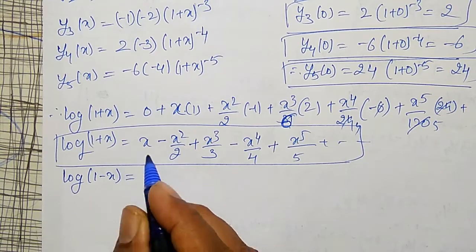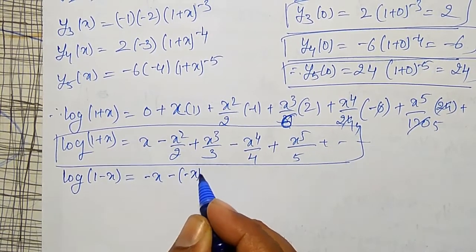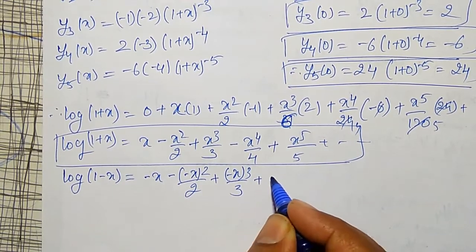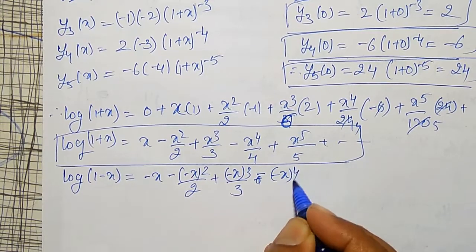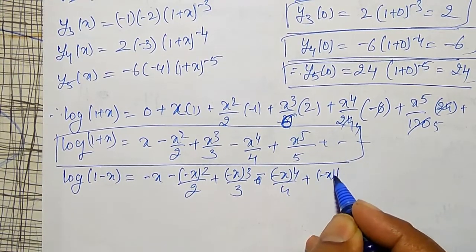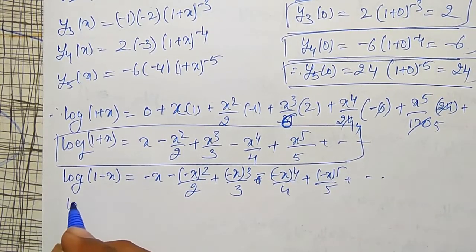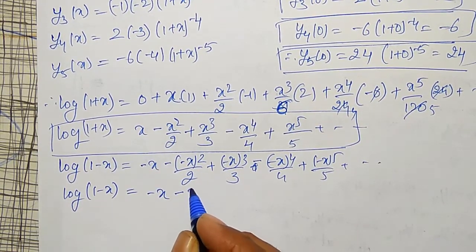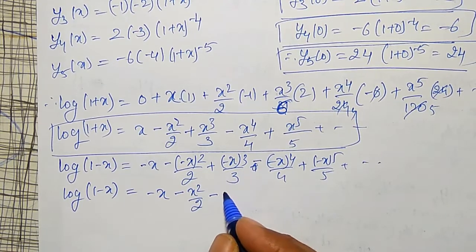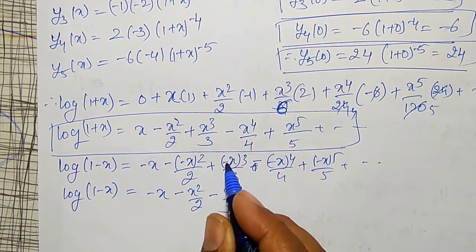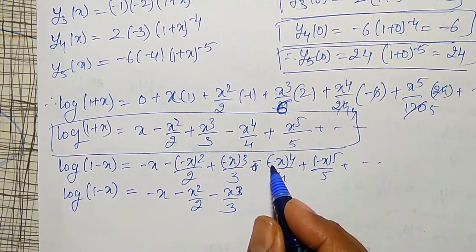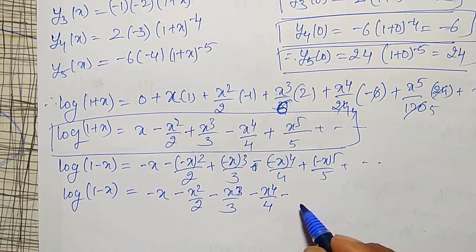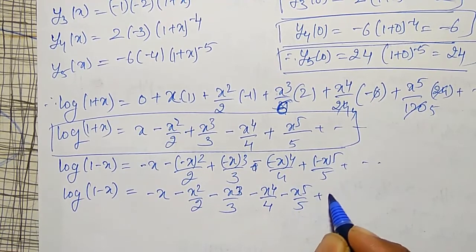Substituting -x for x, I get log(1 - x) = (-x) - (-x)²/2 + (-x)³/3 - (-x)⁴/4 + (-x)⁵/5 + ... Expanding this gives log(1 - x) = -x - x²/2 - x³/3 - x⁴/4 - x⁵/5 - and so on.